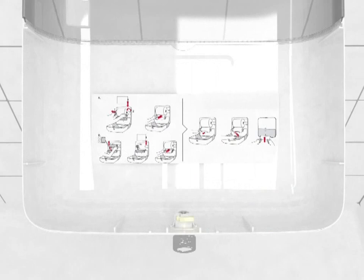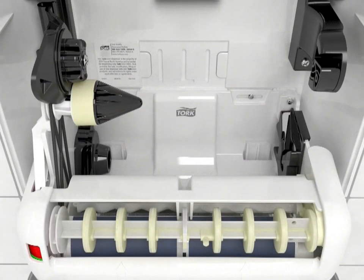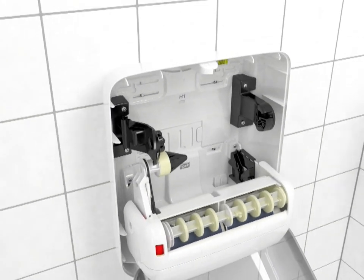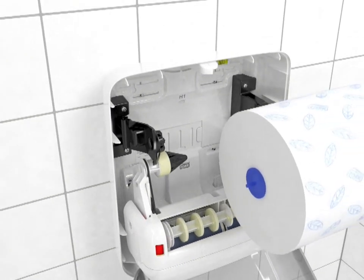You'll notice once you open your dispenser that loading instructions are located on the inside of the front cover. Your torque refill plug on one side, and an open core on the other. This helps to ensure that it's loaded properly.